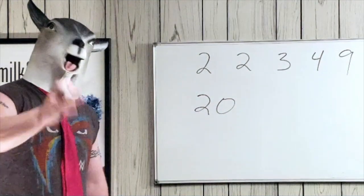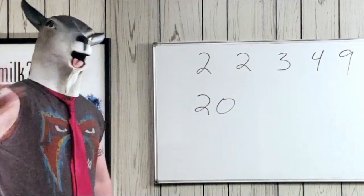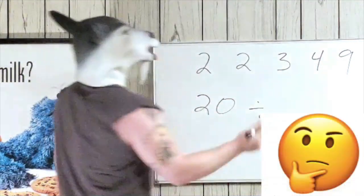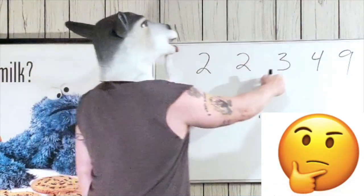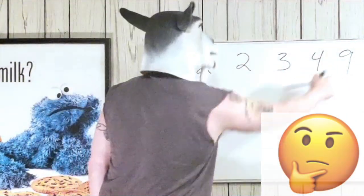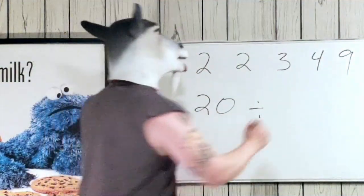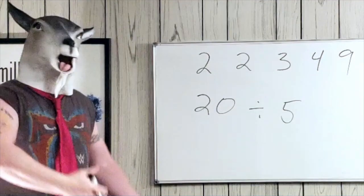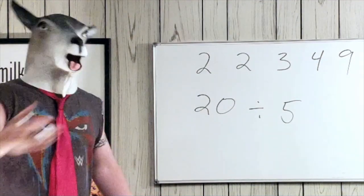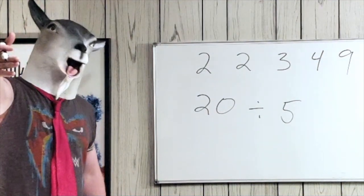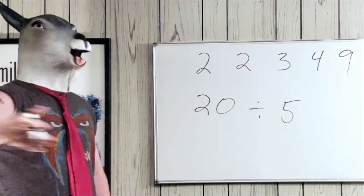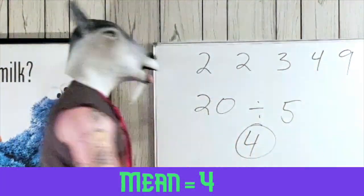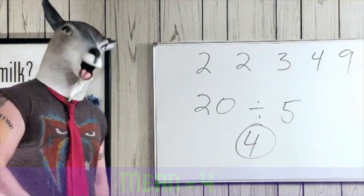Now we just need to divide by how many different numbers there are. We count: 1, 2, 3, 4, 5. So it's 20 divided by 5. You can pop it in your calculator if you like, but 20 divided by 5 is 4. So your mean is 4.